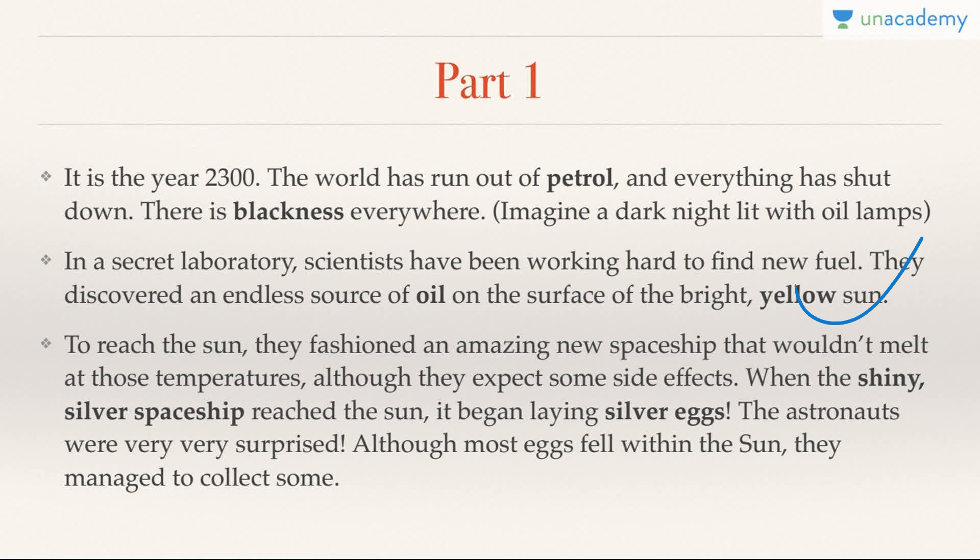To reach the sun they fashioned an amazing new spaceship that wouldn't melt at those temperatures, although they expected some side effects. When the shiny silver spaceship reached the sun, it began laying silver eggs. So the silver color can be remembered with eggs — silver revolution is related to poultry production.